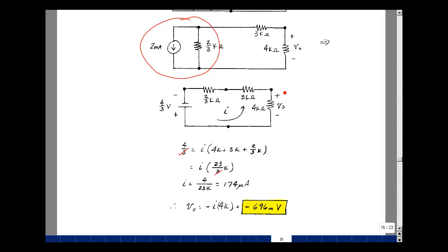If I want to find the output with this polarity, I need to find the current in this direction, but that's the negative of the current we just found. If we take then the negative of this, minus 174 microamps, and multiply that by 4k, we'll get the voltage V0. And that turns out to be minus 696 millivolts. And this is supplemental problem 217.